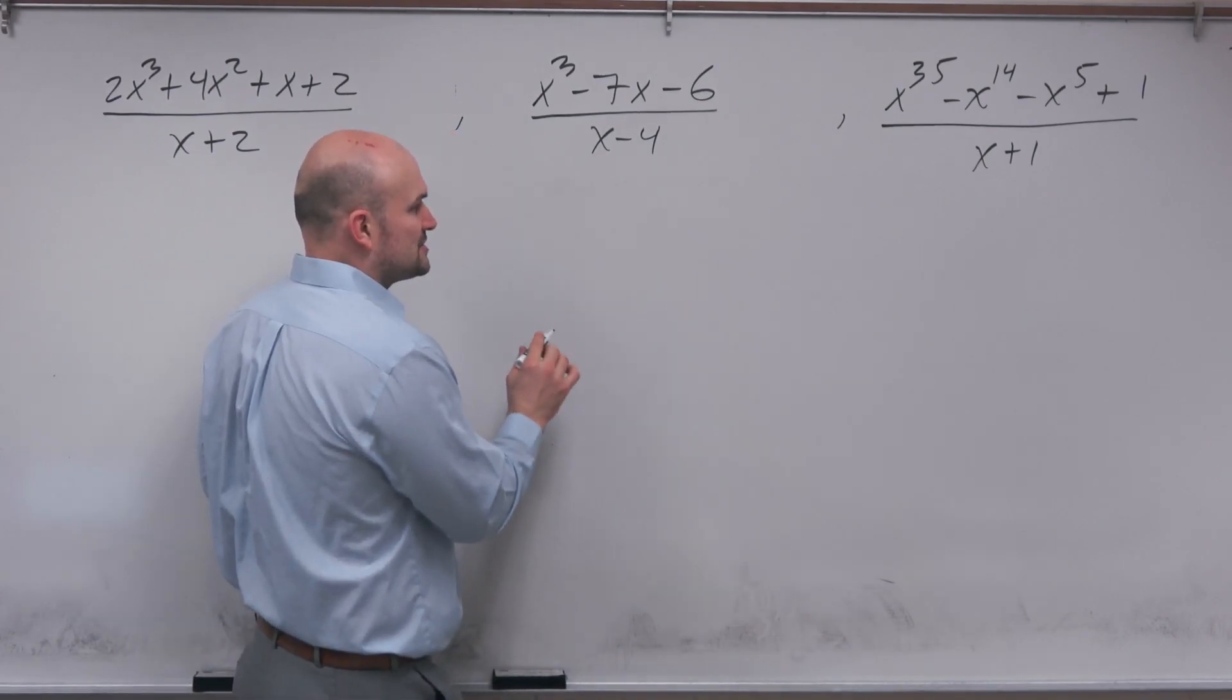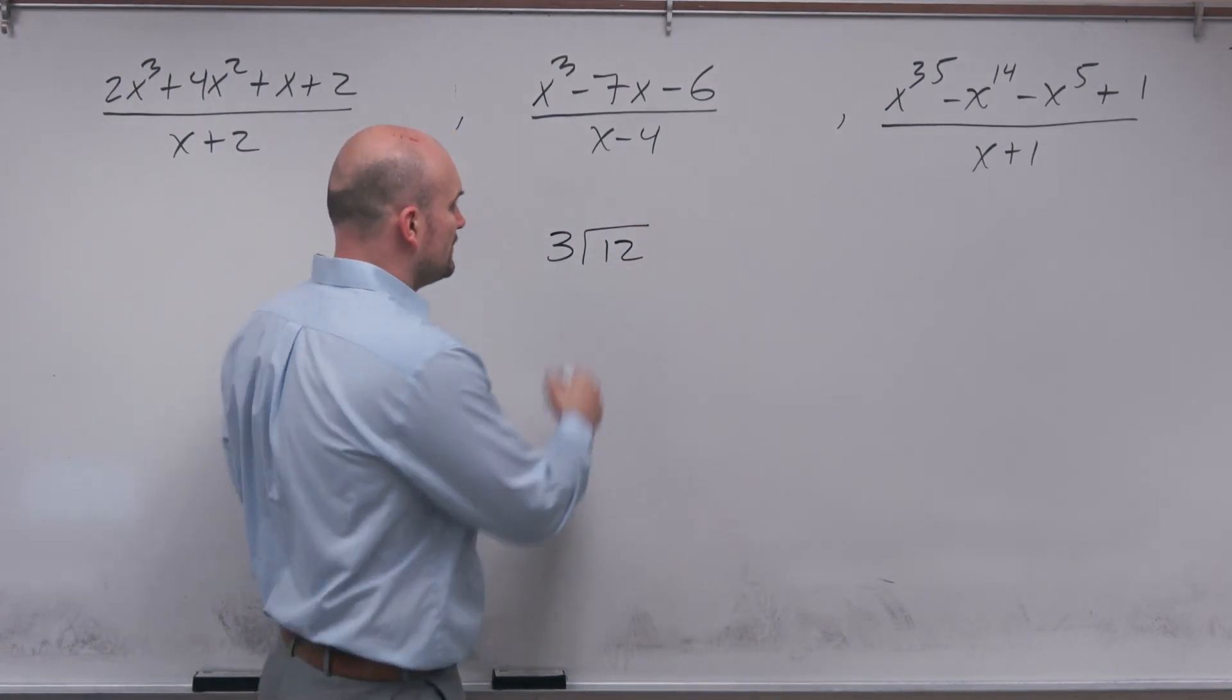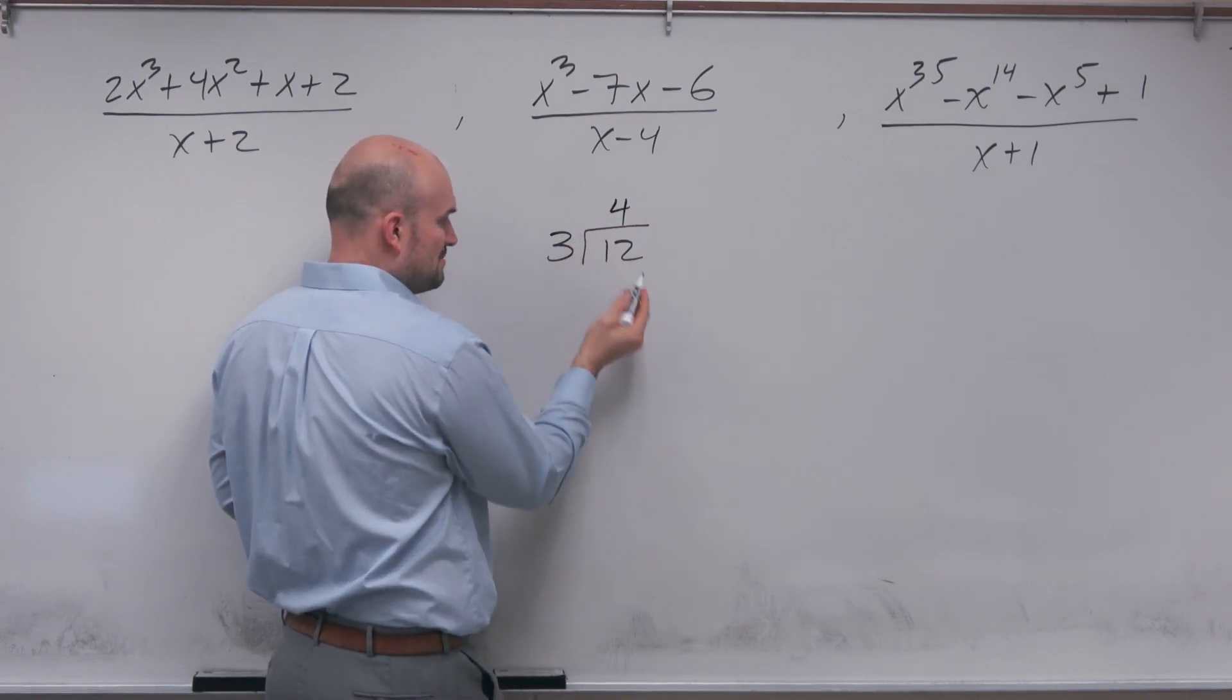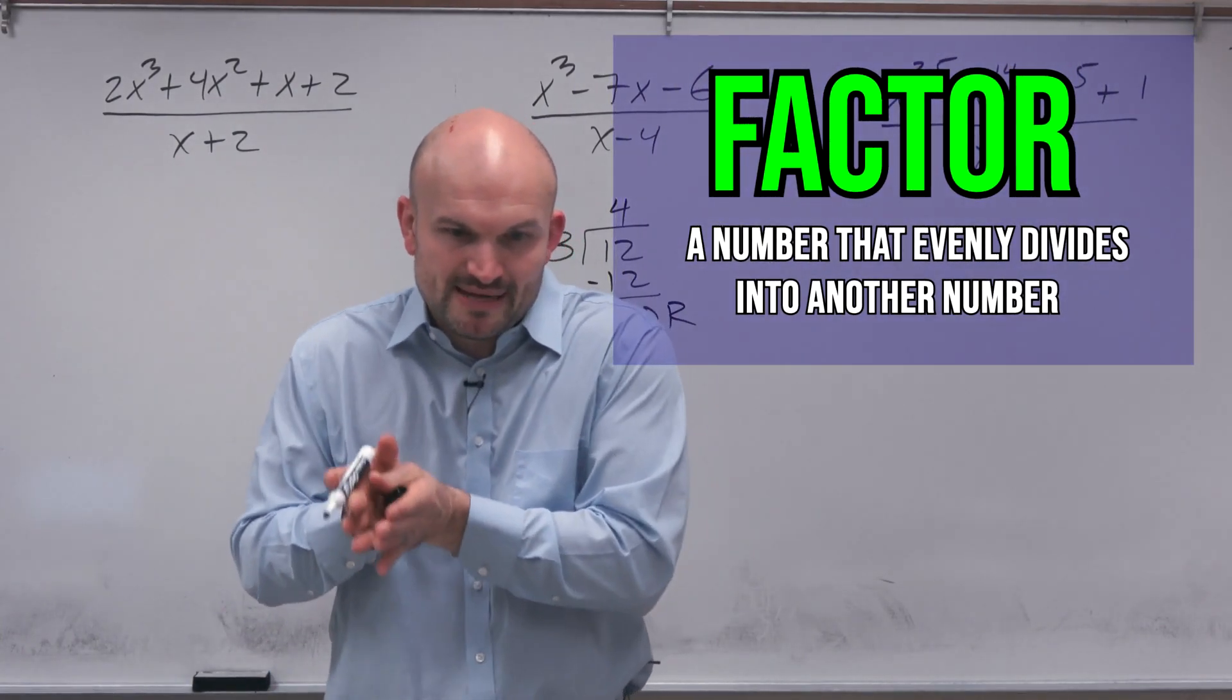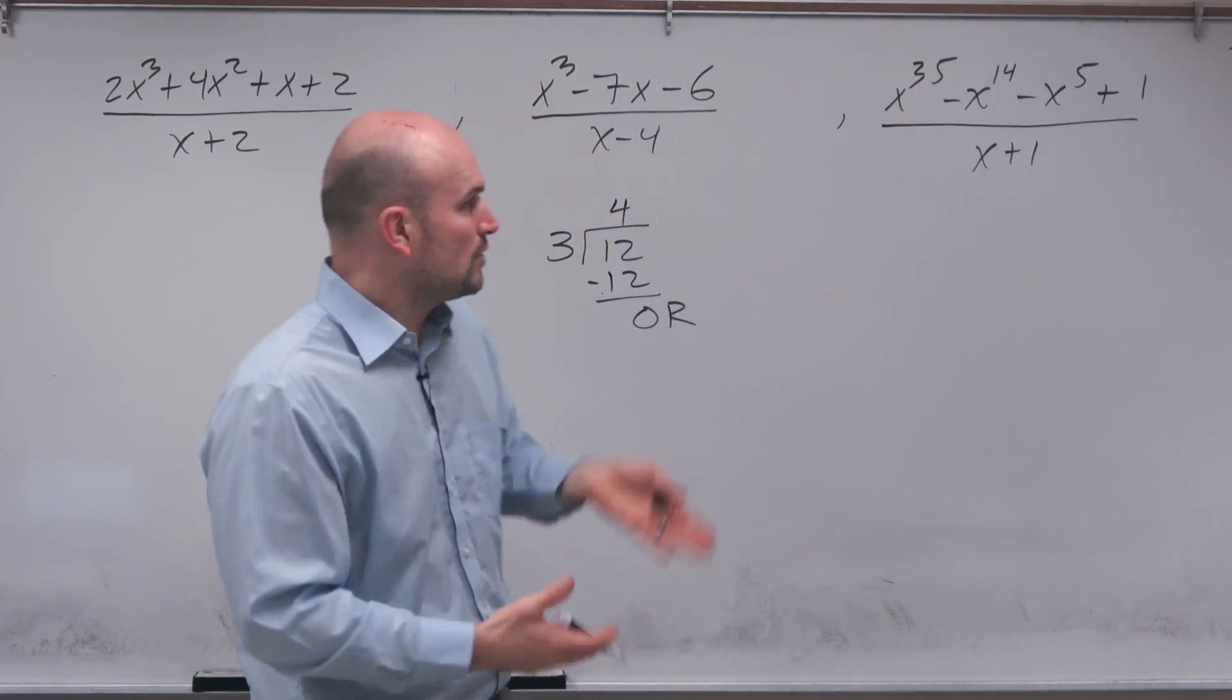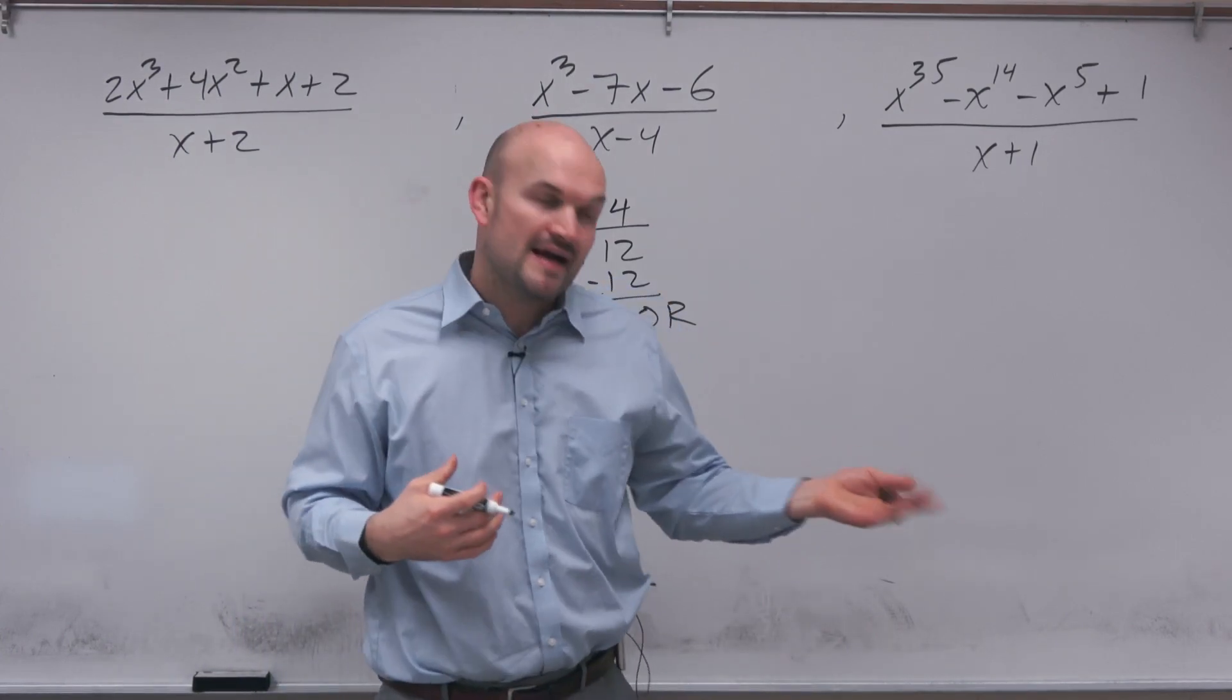There's really two ways we can look at factors of a number. For instance, 3 is a factor of 12 because 3 evenly divides into 12 four times. 3 times 4 is 12, and when you do the division, the remainder is 0. So a factor is a number that evenly divides into another number. That's going to work for variables and expressions as well. If something evenly divides when you have a remainder of 0, then you have a factor.